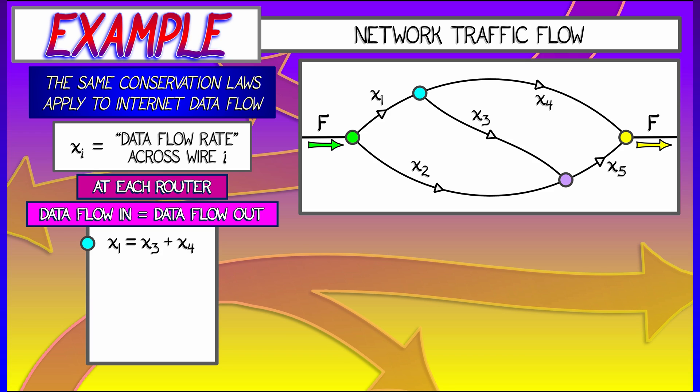what wires are coming in? It has flow rate X1. What wires are going out? Those have flow rates X3 and X4. So X1 equals X3 plus X4. Net in equals net out. Do the same thing at the purple node, and you get X2 plus X3 equals X5 going out.